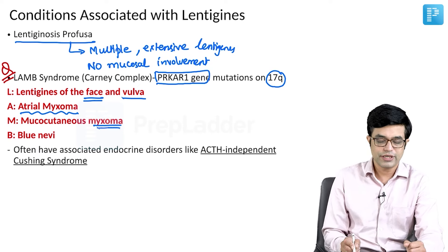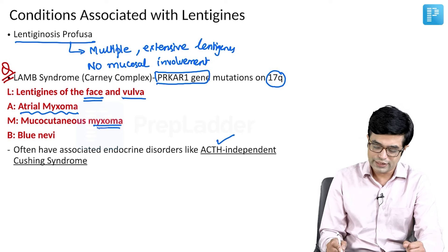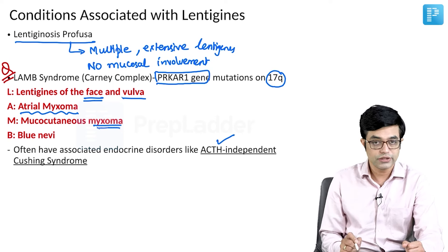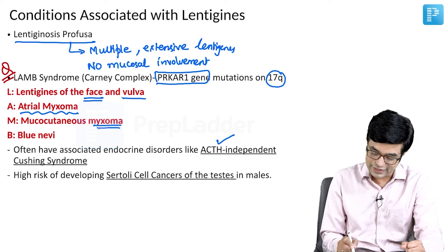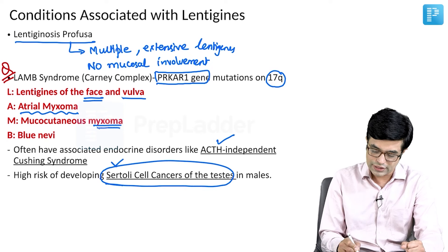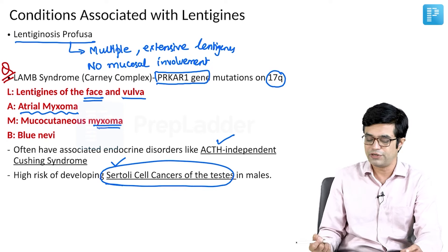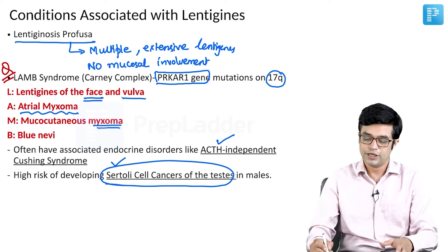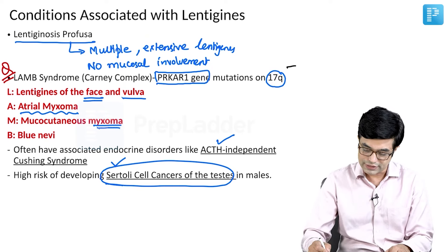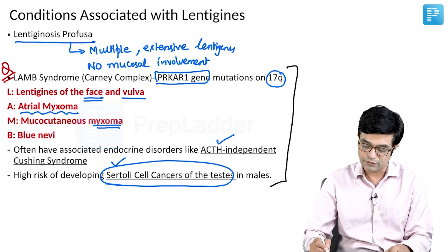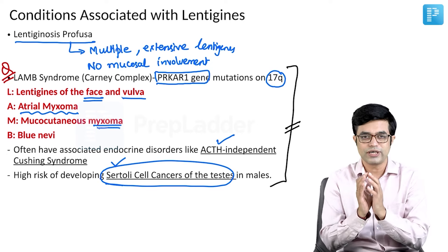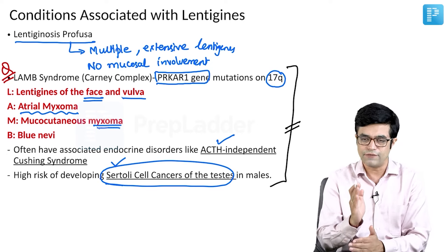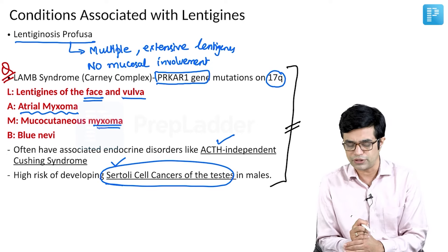Often, they have associated endocrine disorders like ACTH-independent Cushing syndrome, and there is an increased risk of developing malignancies like Sertoli cell cancer of the testis. So testicular cancers, specifically Sertoli cell cancer in males, are frequently common. These points are taken from Nelson's various chapters, combined in one place, and are very important potential MCQ material.